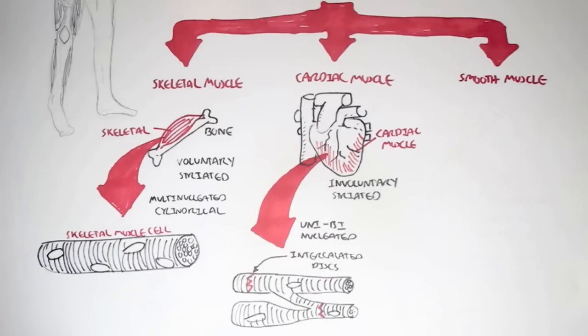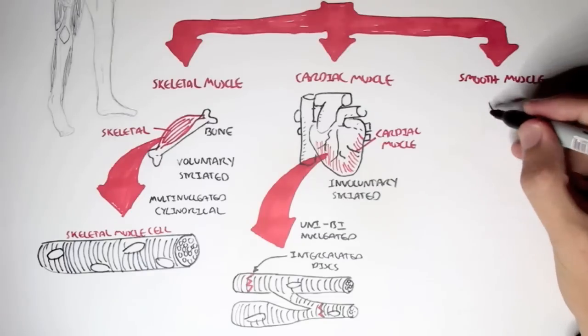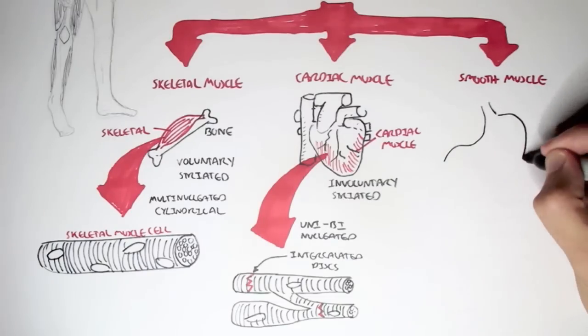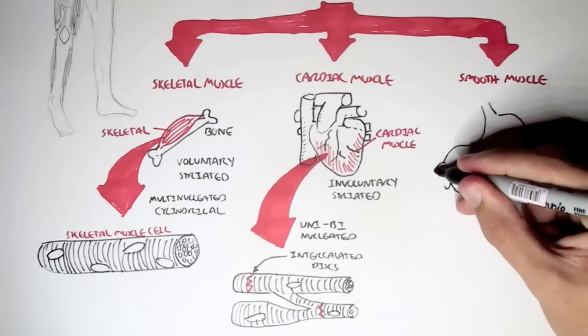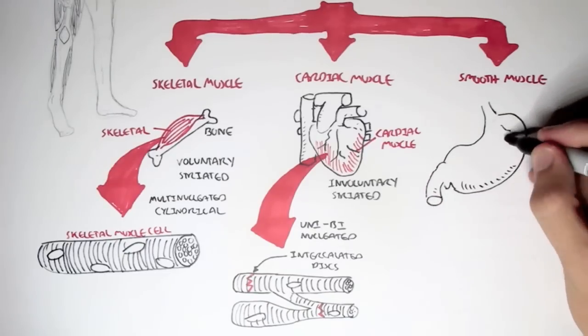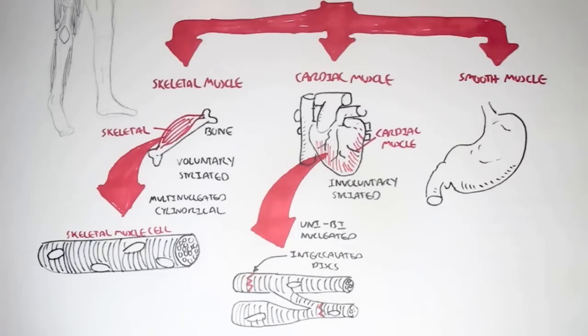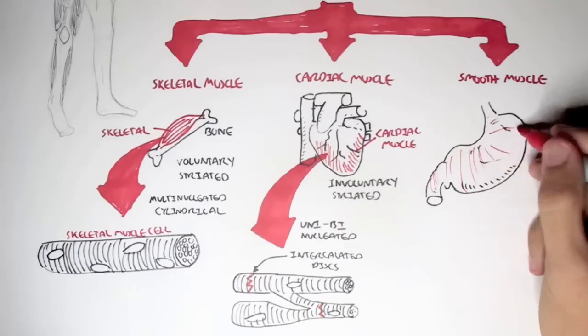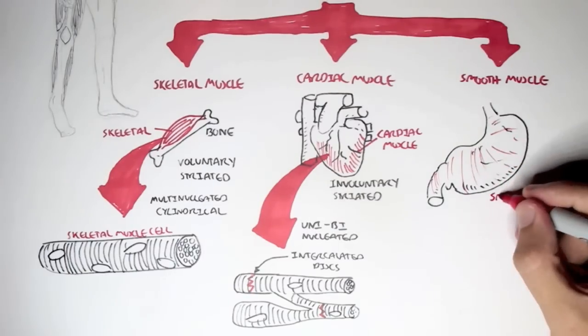The last type of muscle we're going to look at is the smooth muscles. Smooth muscles are found in the stomach and in the intestines, essentially the gastrointestinal tract or GIT, and they usually wrap around each of these organs to assist in the movement of food down the gastrointestinal tract from our mouth to our anus essentially.